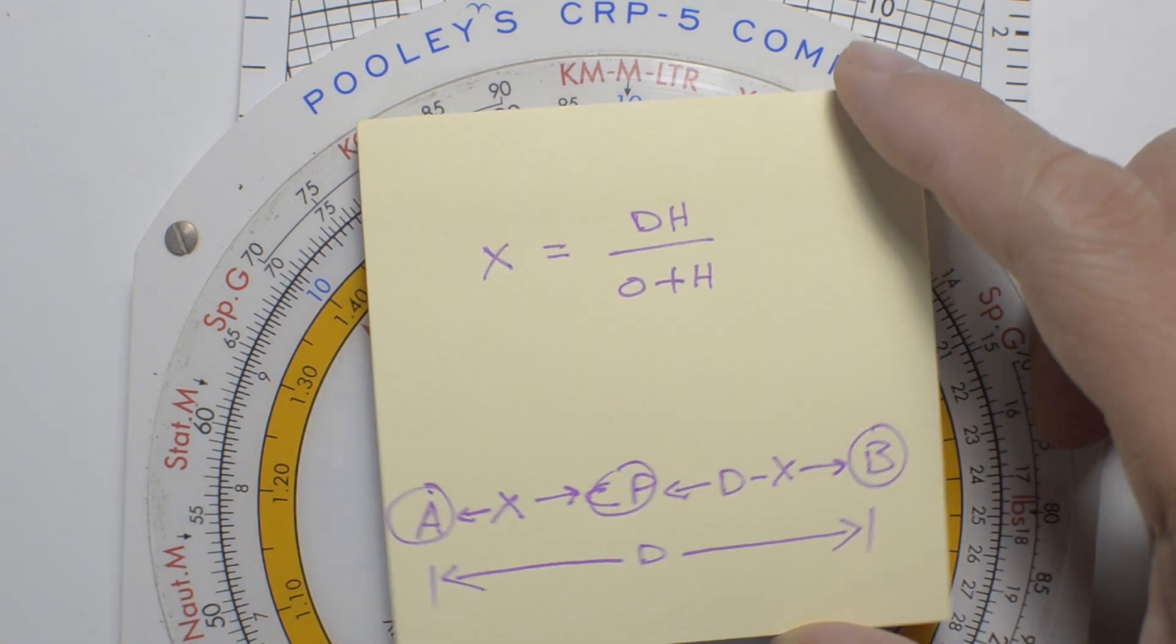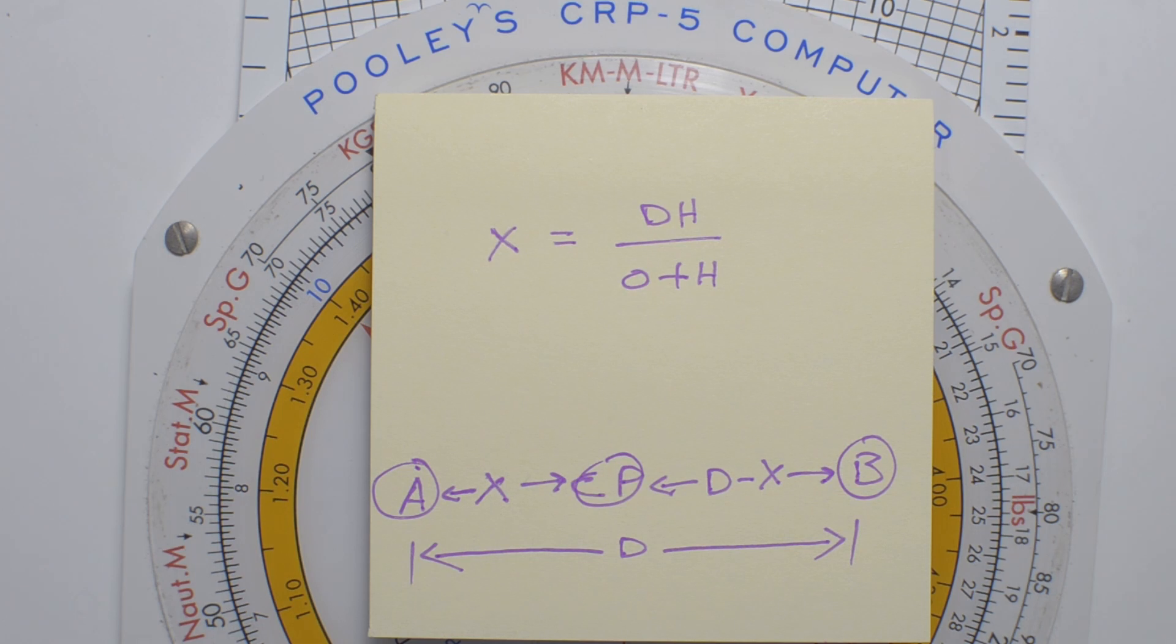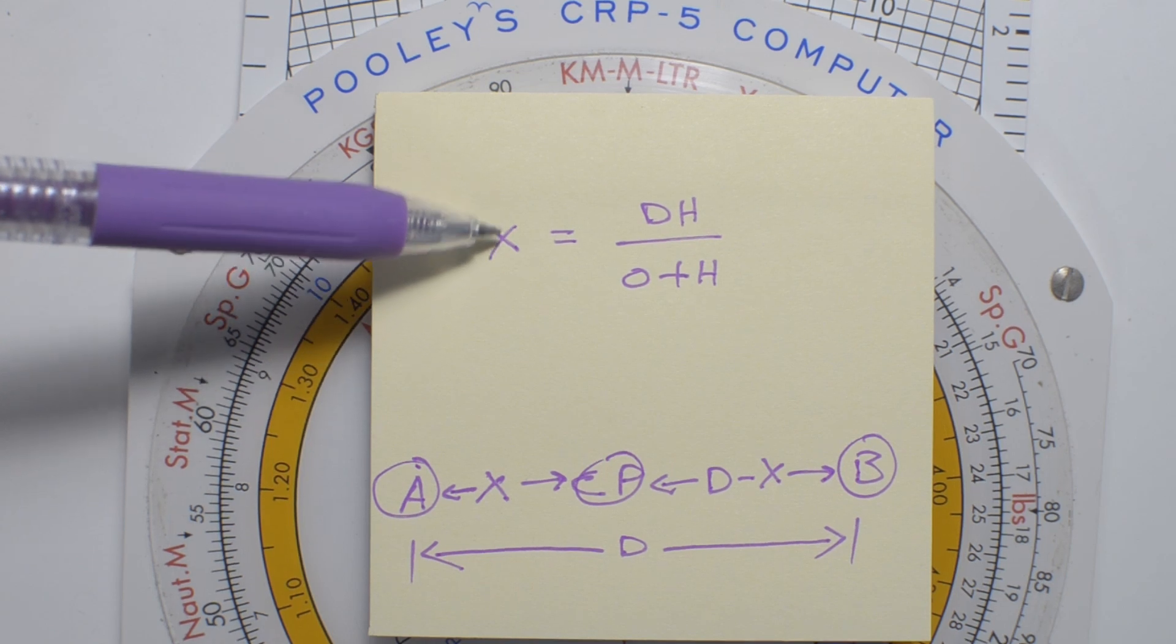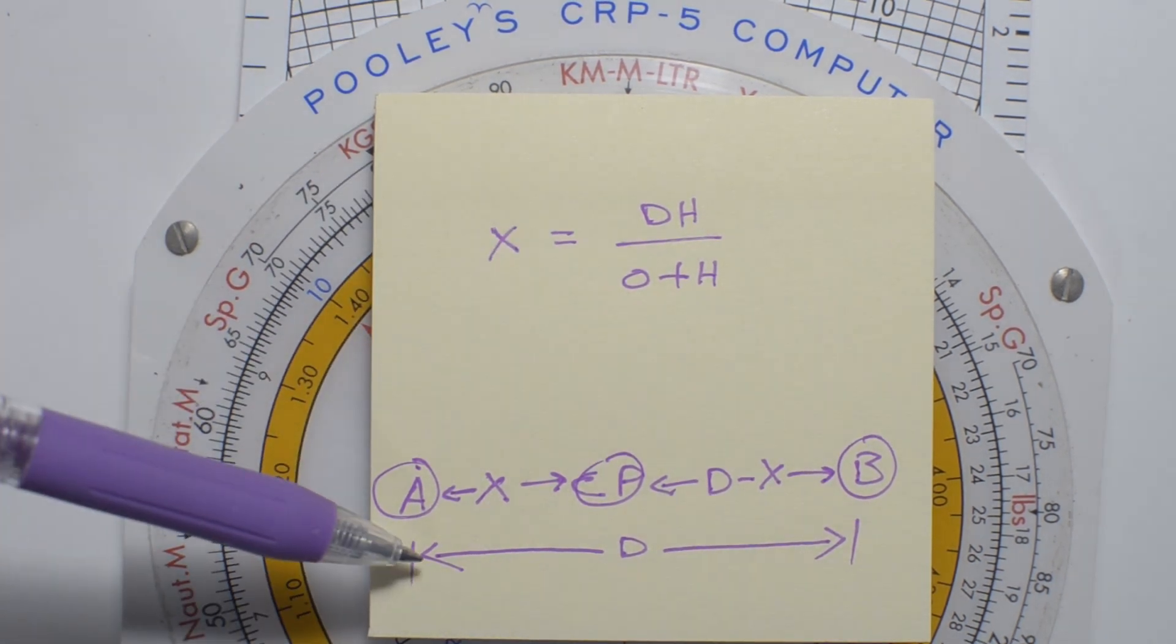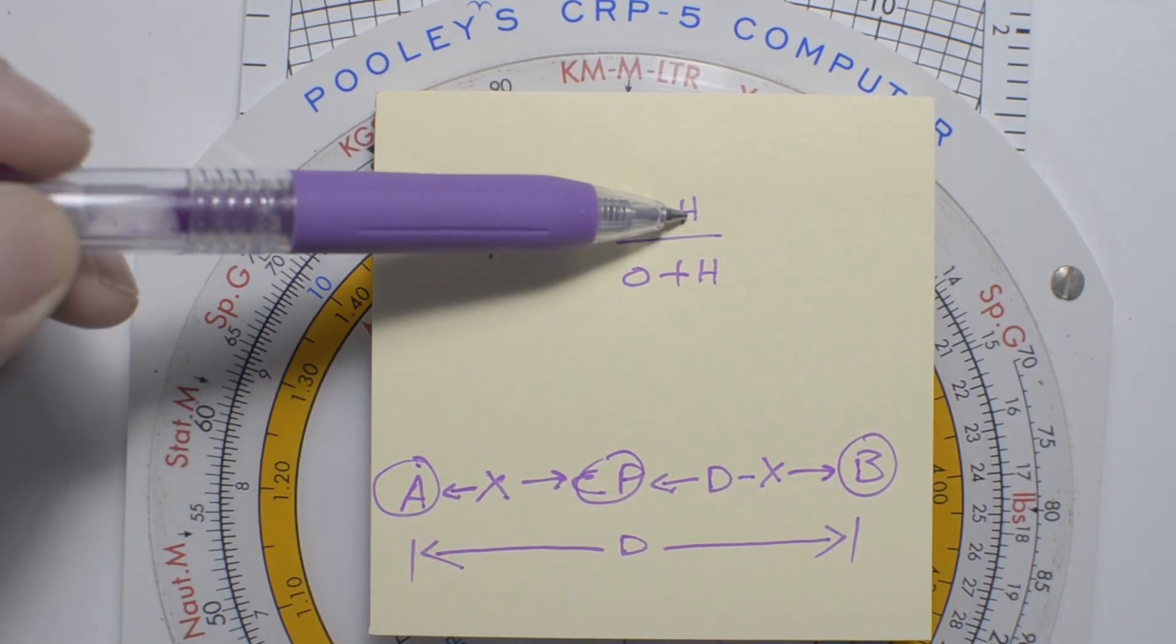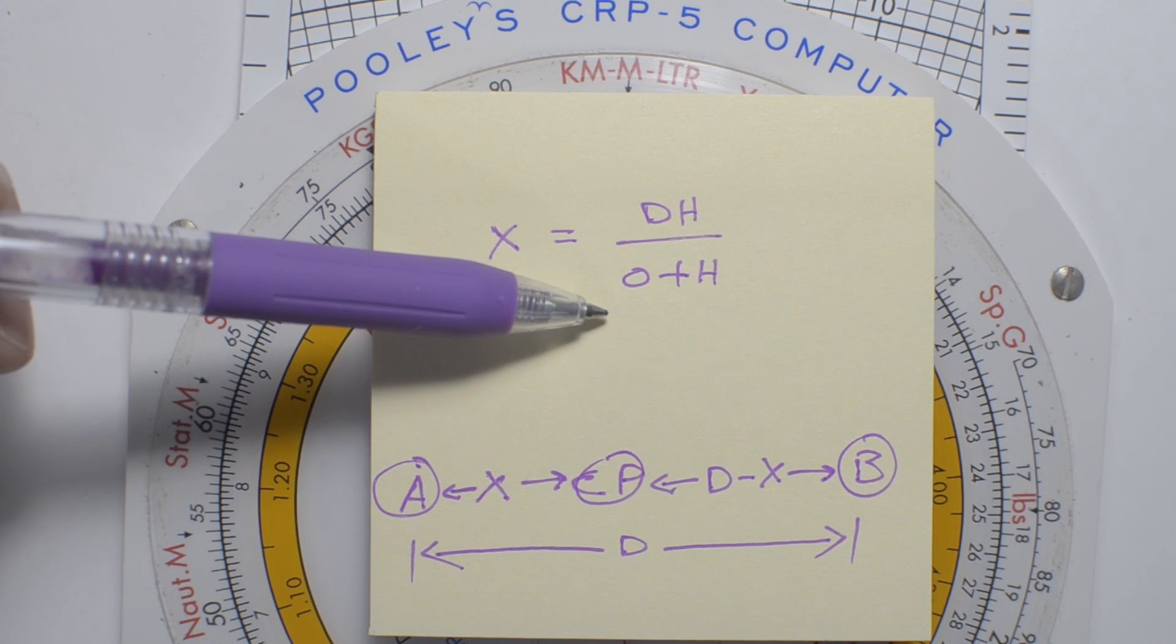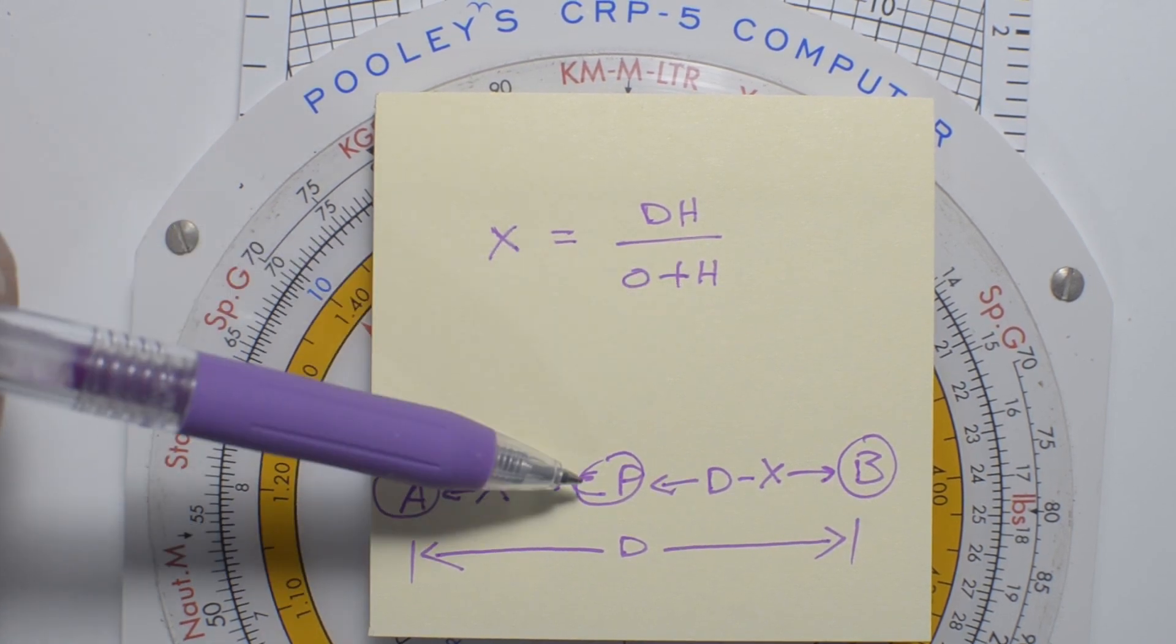I'm going to leave this on screen for a while, so that you can appreciate our formula. Distance to critical point is equal to the total distance between A to B, multiplied by the ground speed home, divided by the ground speed out, plus ground speed home.